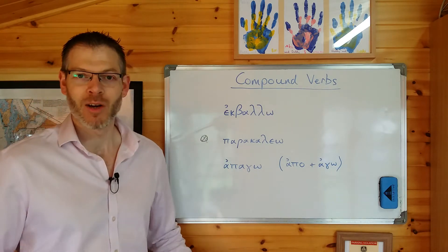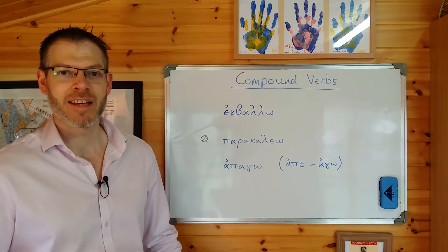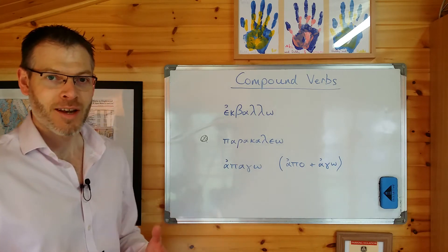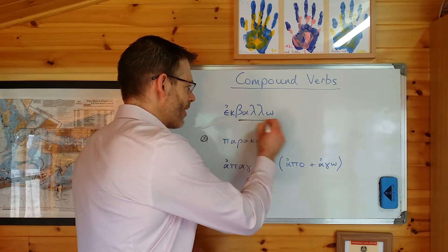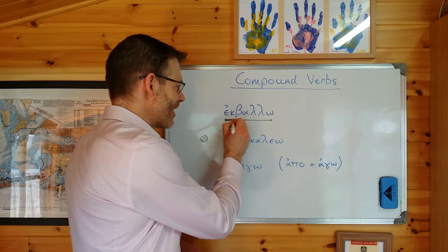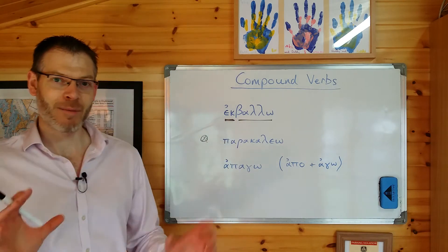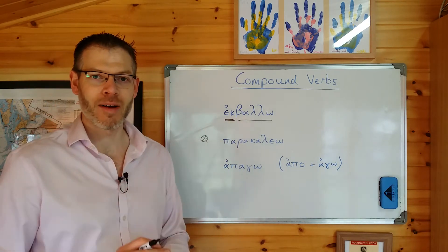But first, compound verbs, what are they? A compound verb is very simply a verb which is made up from a compound of a verb plus a preposition. And the verb and the preposition join together to form a new word.